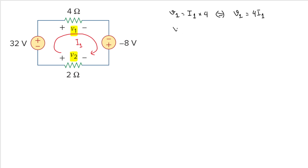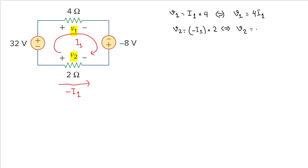Now what is v2? I1 is going to the left, but v2's positive sign is on that side, so the current should be going in the opposite direction — that means it is minus i1. Because current goes from positive to negative in a resistor, v2 is minus i1 multiplied by the resistance of 2 ohms, so v2 equals minus 2i1.